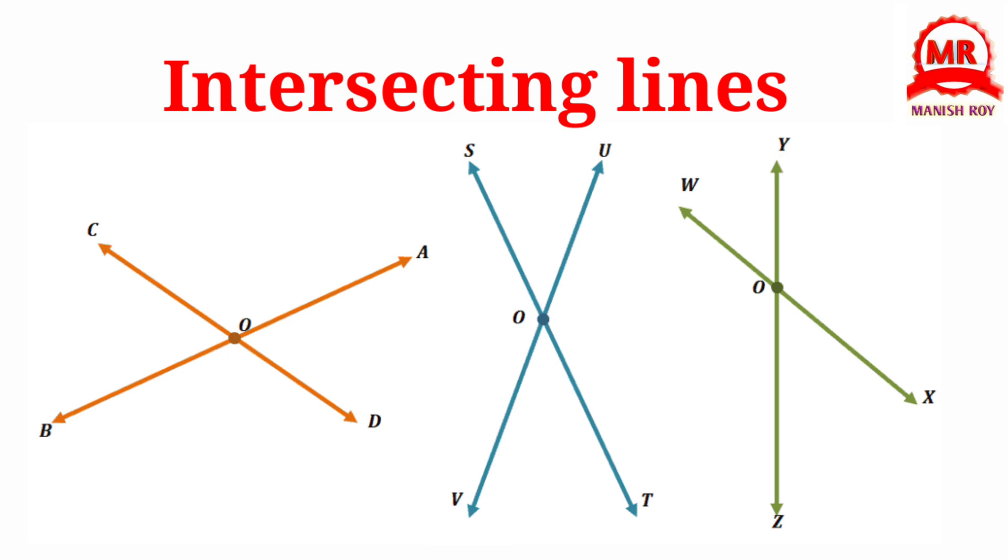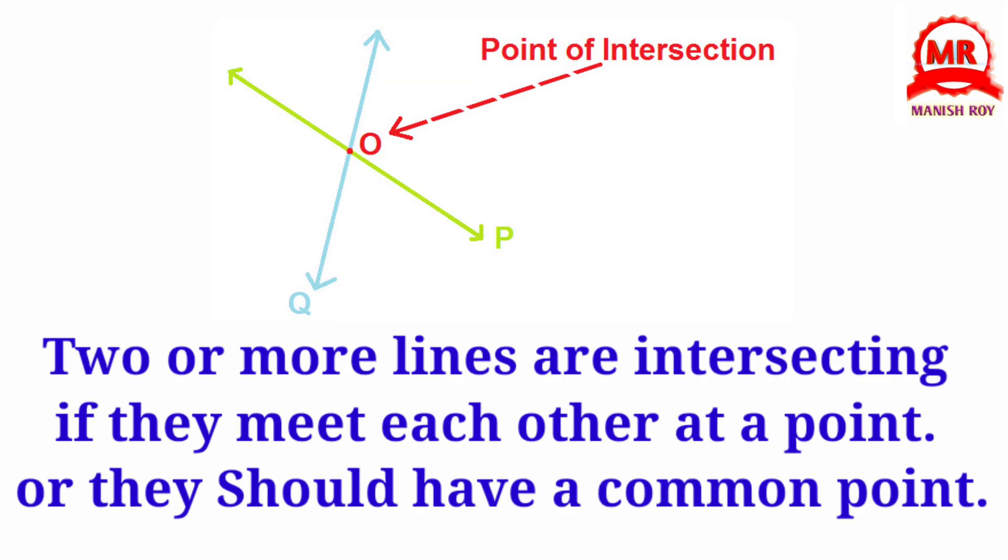Intersecting Lines. Two or more lines are intersecting if they meet each other at a point, or they should have a common point.